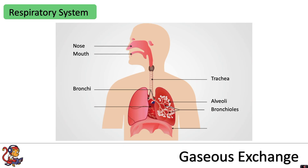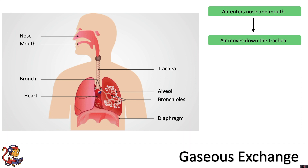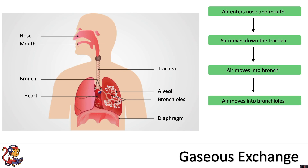The final parts that make up the respiratory system are the diaphragm, which is the muscle at the bottom, and within the chest cavity you also have the heart. So when we breathe in, air enters our nose and mouth, moves down the trachea, then into the bronchi, then into the bronchioles, and finally it ends up in the air sacs at the end, which are the alveoli.